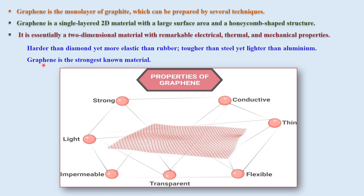Graphene is said to be harder than diamond yet more elastic than rubber, tougher than steel yet lighter than aluminium. So graphene is the strongest known material, which possesses various properties: it is very strong, light, impermeable, transparent, flexible, thin and conductive.